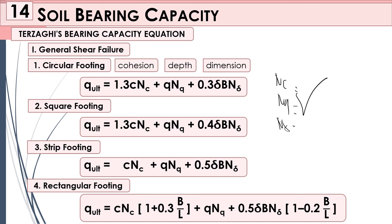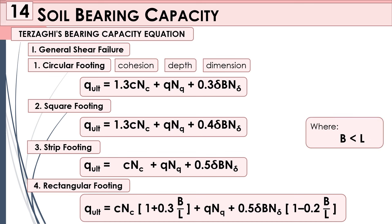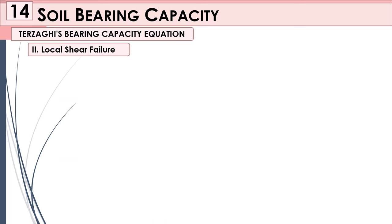For this topic I will just give you the values of Nc, Nq, and Nγ so we don't need to memorize additional formulas. Regarding the base and length of our footing or foundation, always remember: the smallest dimension is the base. Base is less than or equal to the length, so you won't get confused.